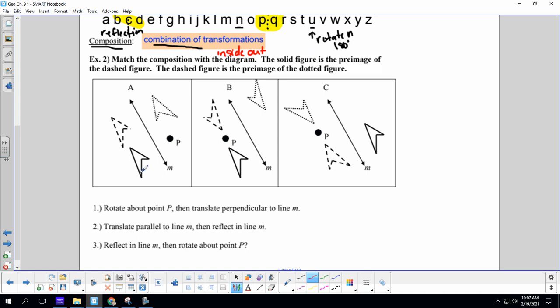We're going to match the composition with the diagram. The solid figure, I like these because they look like a little Star Trek insignia, the solid figure is the pre-image of the dashed figure. Here, so this is the first guy. Here is this after the first composition, so it's our second guy. And then our second transformation gets us to this third figure here.